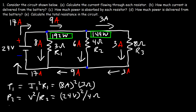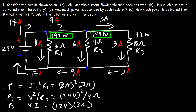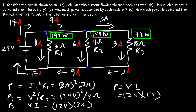For R3, using voltage times current: 24 volts across it and the current is 3 amps, so 24 times 3 is 72 watts. Now for the power delivered by the battery: voltage times current — 24 volts multiplied by 17 amps — so the battery delivers 408 watts. Adding 192 plus 144 plus 72 gives 408, which confirms everything is correct.